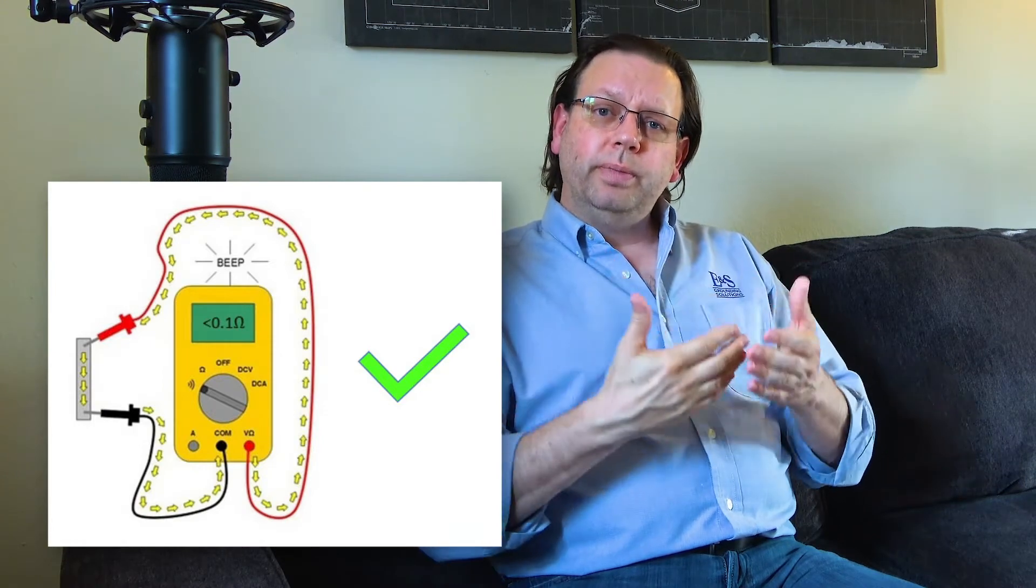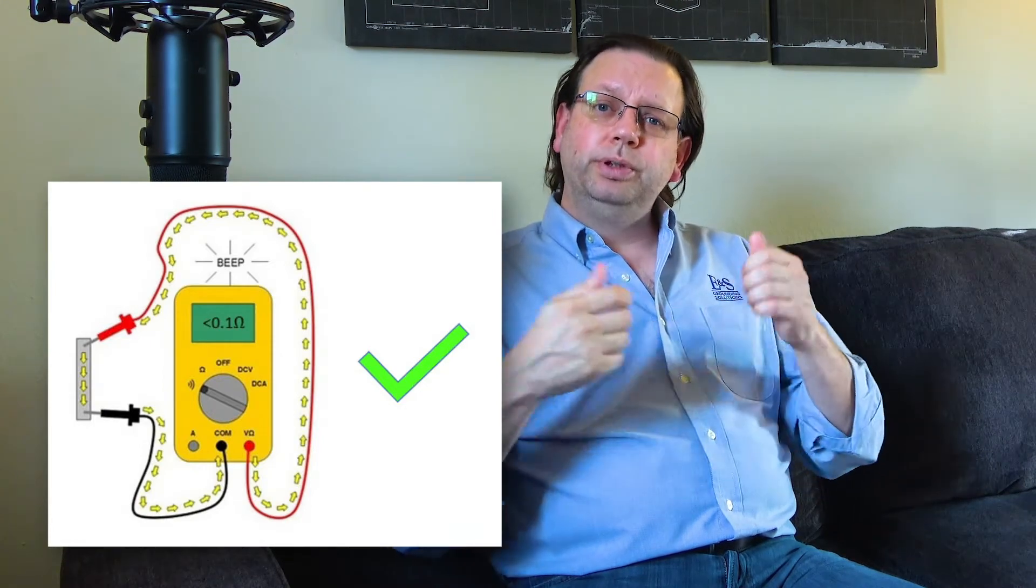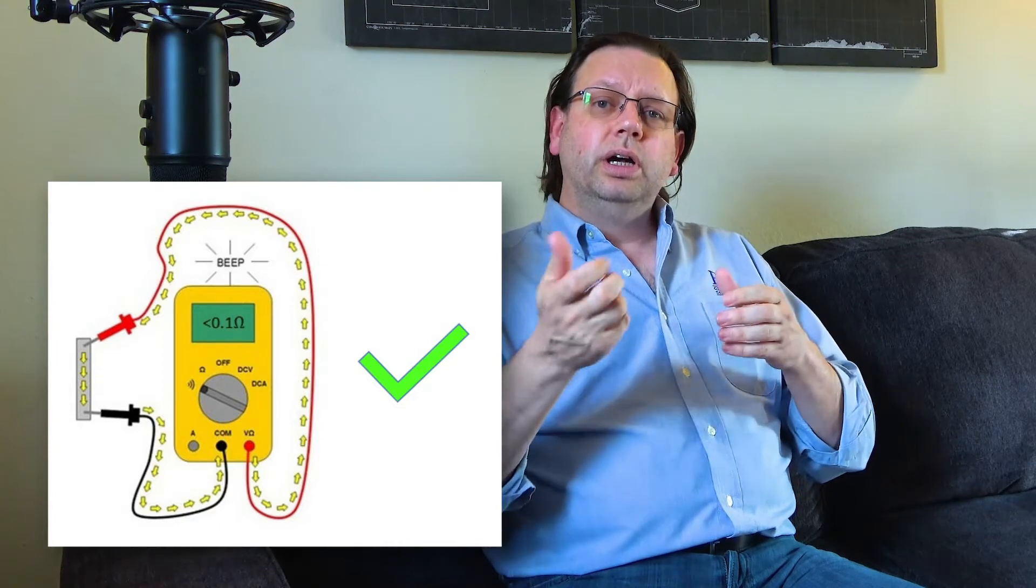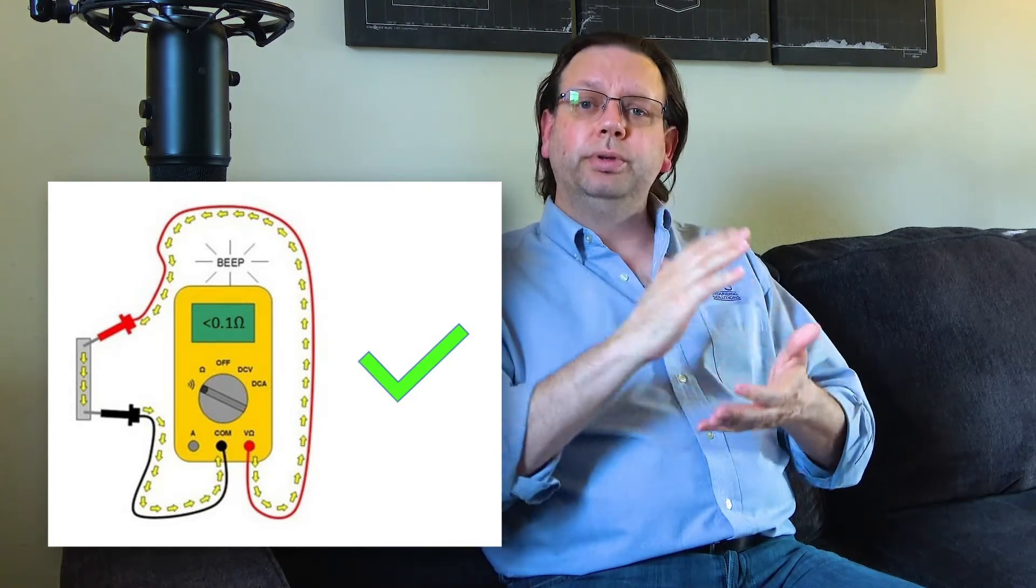Now there's a number of different methodologies behind this. Some people use AC systems with high current. Some people use DC systems that hold and charge, put enough electrons to charge the entire ground system and measure decay rates, what they call an induced polarization system. We tend to like that technique, but there are numerous techniques out there. The ultimate goal, of course, is just to confirm that you do have a nice low path.